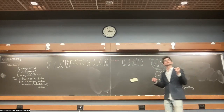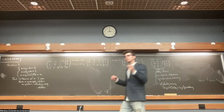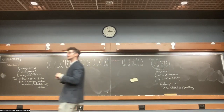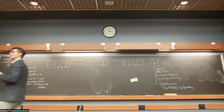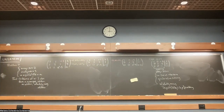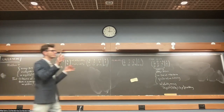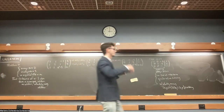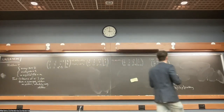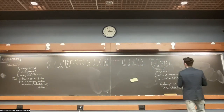A student asks: if the nullity had been two, it would be like a plane? Yes, because it's two-dimensional, a plane, and it needs two parameters. Correct.